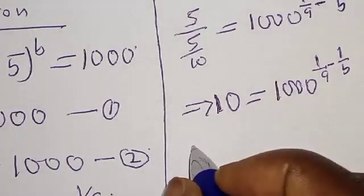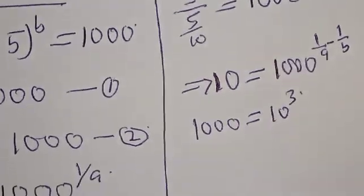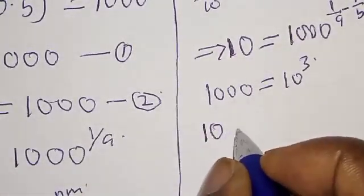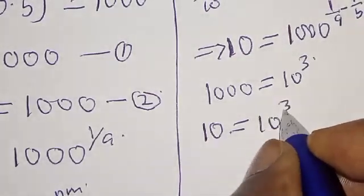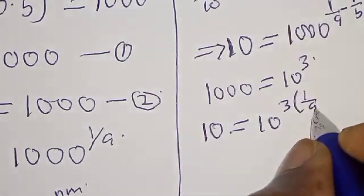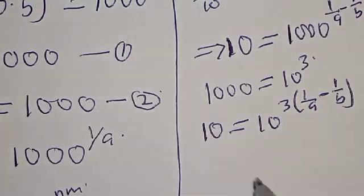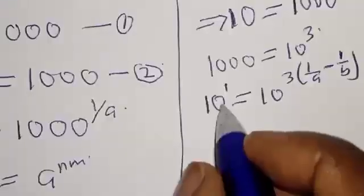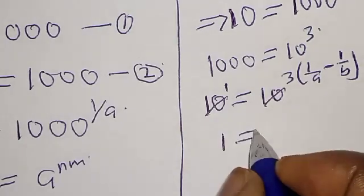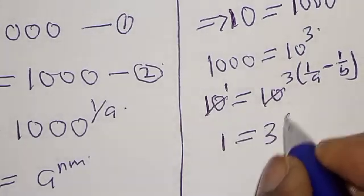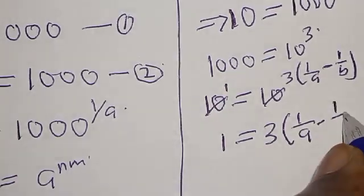Remember that 1000 is equal to 10 raised to the power 3. Therefore, we have 10 raised to the power 3 times (1 over a minus 1 over b). Then, this is the same as 10 raised to the power 1 — they have the same base, so this one will cancel this.